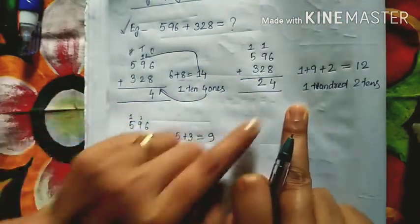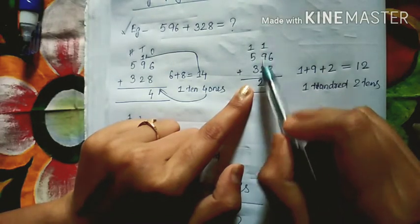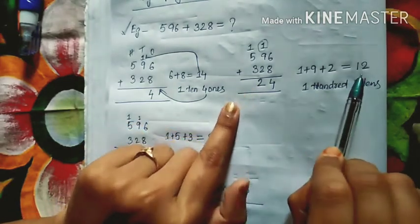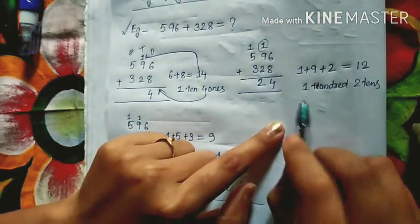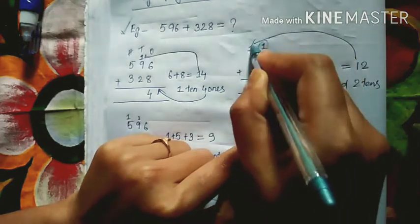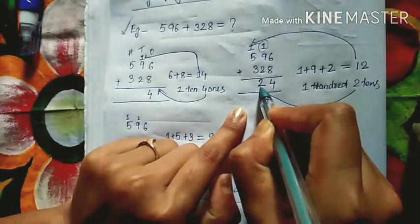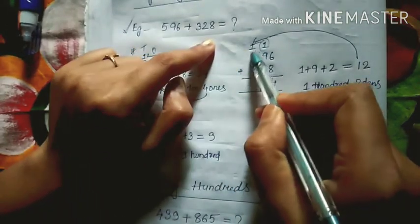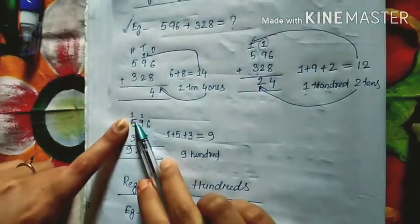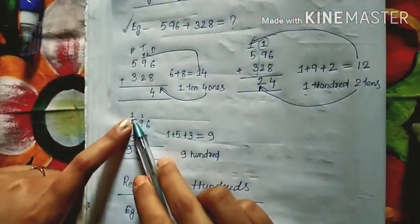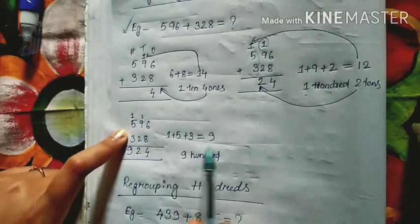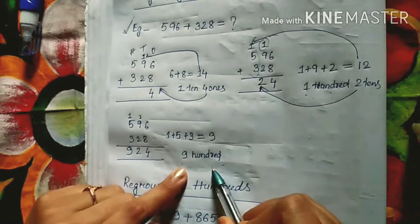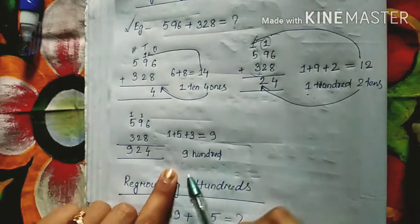In the second step we solve for the tens place. We already have 1 carry, so we add them together and get 12. This 1 will carry over and this 2 will come here. Now this carried 1 will add to the hundreds place — so 1 plus 5 plus 3 equals 9 in the hundreds place.